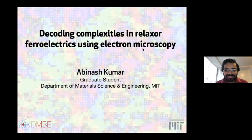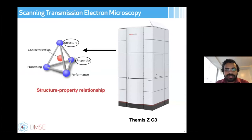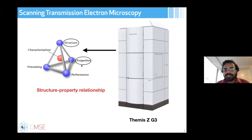Thanks Jim for the introduction. Today I'll be talking about decoding complexities in relaxer ferroelectrics using aberration-corrected electron microscopy. We mainly focus on scanning transmission electron microscopy, imaging at the atomic scale to find structure-property correlations in different materials. I'll show examples of what we can do using the electron microscope we have at MIT Nano, installed earlier this year, and then move to what we can learn about relaxer ferroelectrics.